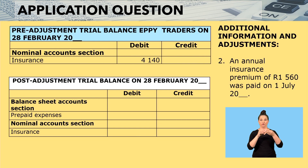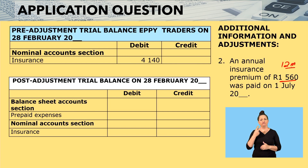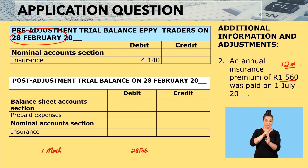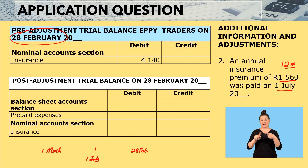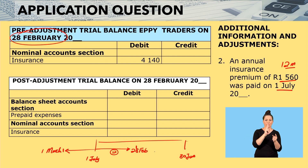Adjustment number 2 reads: an annual insurance premium of 1,560 was paid on the 1st of July. An annual insurance premium means this is a premium for 12 months. Our financial period ends on the 28th of February, meaning it began on the 1st of March and ends on the 28th of February. This insurance premium was paid from 1 July, so it will end on the 30th of June. Our financial period runs from March to February, which is 12 months, and the insurance premium has been paid from July to June.